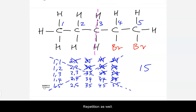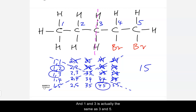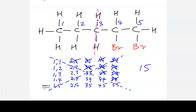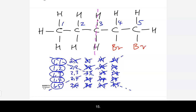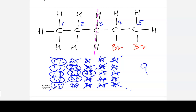So if we draw another line, we can see there's repetition on either side. As we said, 1,2 is the same as 4,5, and 1,3 is the same as 3,5. We can get rid of one of those sides. What we're left with is: 1,1 — 1,2 — 1,3 — 1,4 — 1,5 — 2,2 — 2,3 — 2,4 — 3,3. That gives us one, two, three, four, five, six, seven, eight, nine — there are nine different ways.